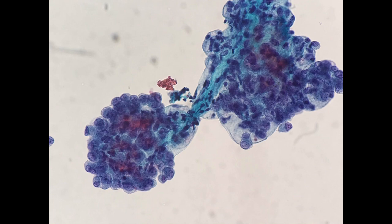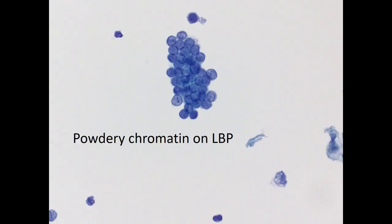On liquid-based preparations, you may also see a papillary arrangement with fibrovascular cores, and the nuclear features may be a little more difficult to appreciate, with a vague convolution of the nuclei. Usually the powdery chromatin of PTC is what catches my eye on a liquid-based preparation — the cells are powdery and the nuclear contours, while still evident such as these little grooves, are much more subtle on these LBPs.